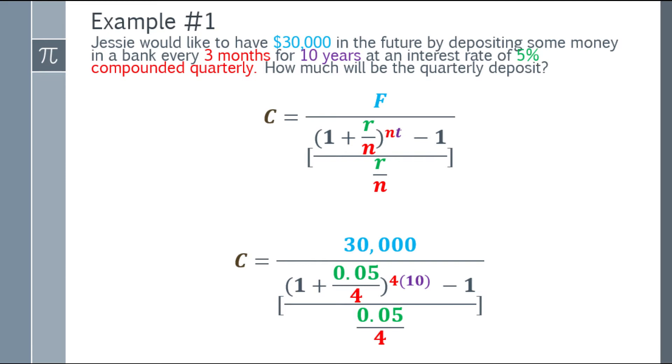The cash flow equals, in the numerator part, the future value is $30,000. It's color-coded so you can see it on the screen. In the denominator part, we have a complex fraction. In the parentheses, we have 1 plus 0.05 over 4. That's 0.05 because it's 5%, and compounded quarterly means 4. The exponent is n times t, which is 4 times 10. Subtract 1 from that result. Don't forget the minus 1. At the bottom, that's r over n, so 0.05 over 4.